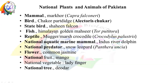The national fish of Pakistan is the Himalayan Golden Mahseer. You will find this in every province of Pakistan. Its scientific name is Tor putitora. It is a game fish and a large-sized carp.